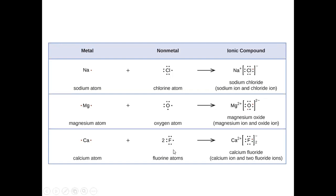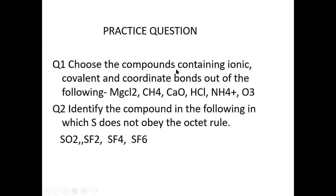I hope that you have understood this. Now, you have to practice questions on the basis of these bond formations. Choose the compound containing the ionic, covalent, and coordinate bonds out of the following: magnesium chloride, CH4, CaO, SCl, NH4 plus, O3. Identify the compound which does not obey the octet rule. Thank you.